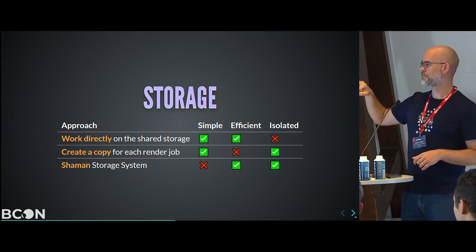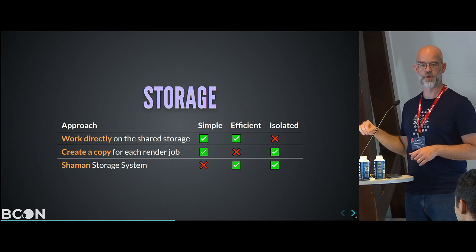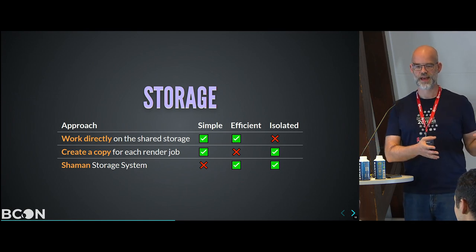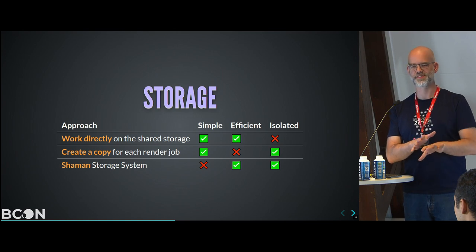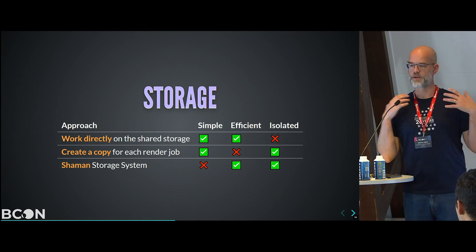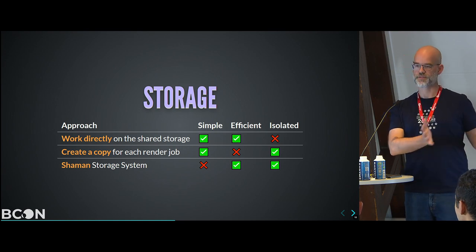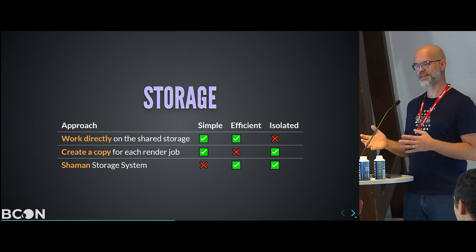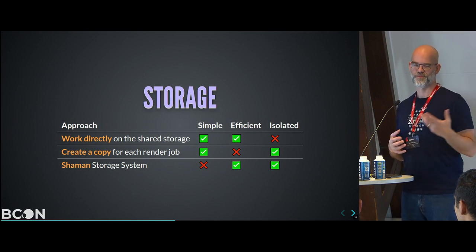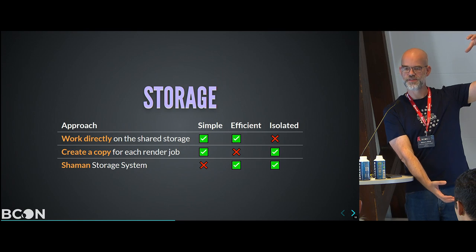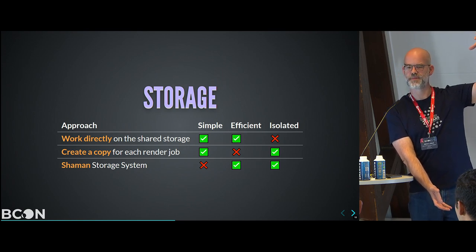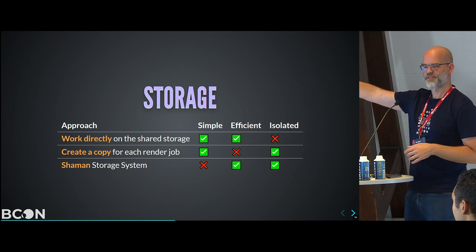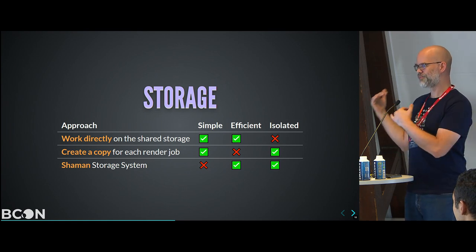The second option is what Blender Studio actually used for quite a while: for every render job, copy all necessary files into the job directory. We do some analysis to figure out which files are needed, then copy them in — giving you full isolation. It's simple and it worked for years. But it made people very unhappy because, for example, in Spring one of those big tall-legged monsters was one and a half gigabytes, we had five or six of them, and that got copied for every single render job — not efficient at all.